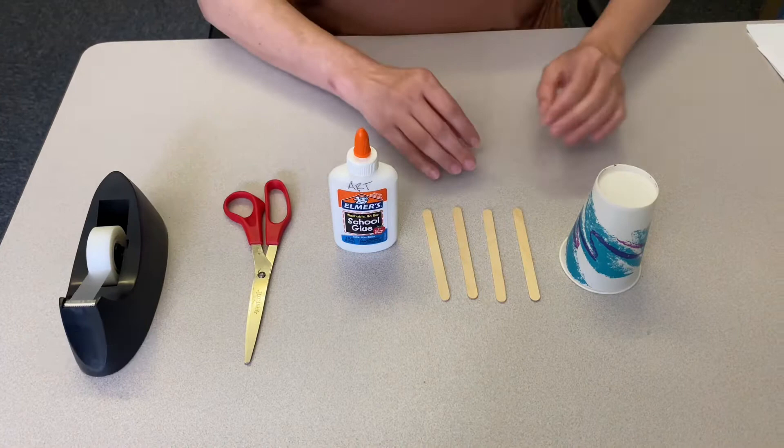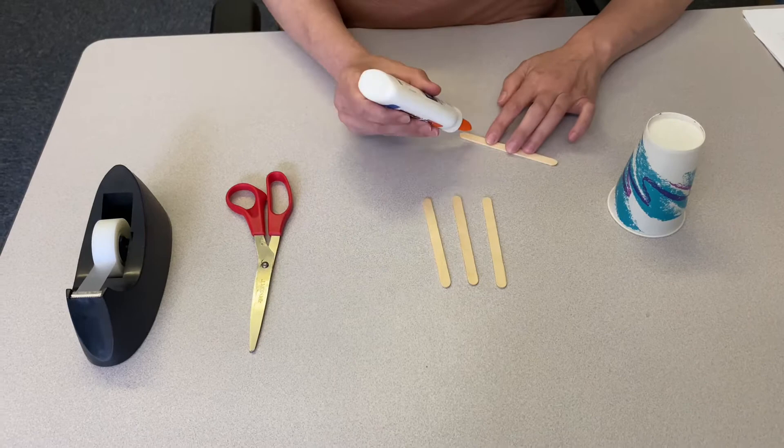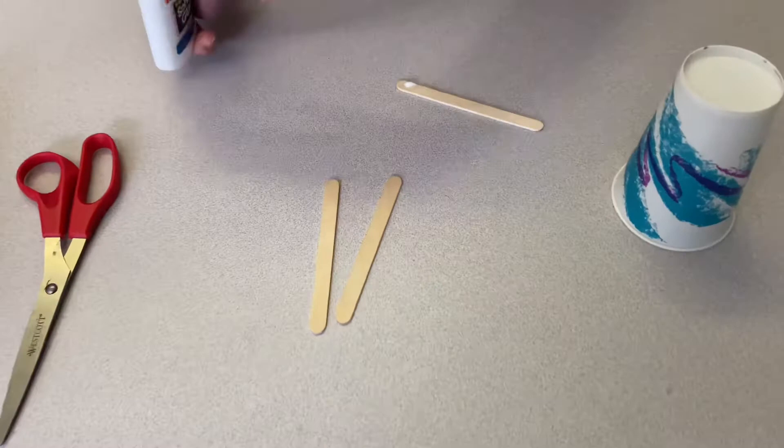We're going to start by taking our popsicle sticks and we're going to put a little bit of Elmer's glue. We're going to dot that and then we're going to add a popsicle stick to create the base of our goalpost.